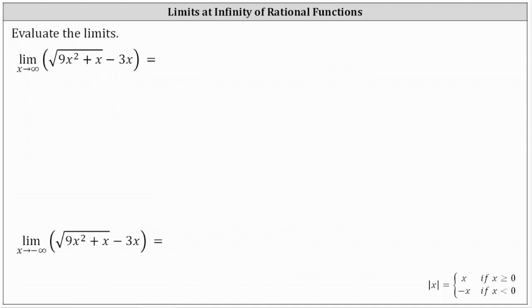We want to evaluate the limits. We have the limit of the square root of the quantity nine X squared plus X minus three X as X approaches infinity. Notice for the second limit, we have X approaches negative infinity.